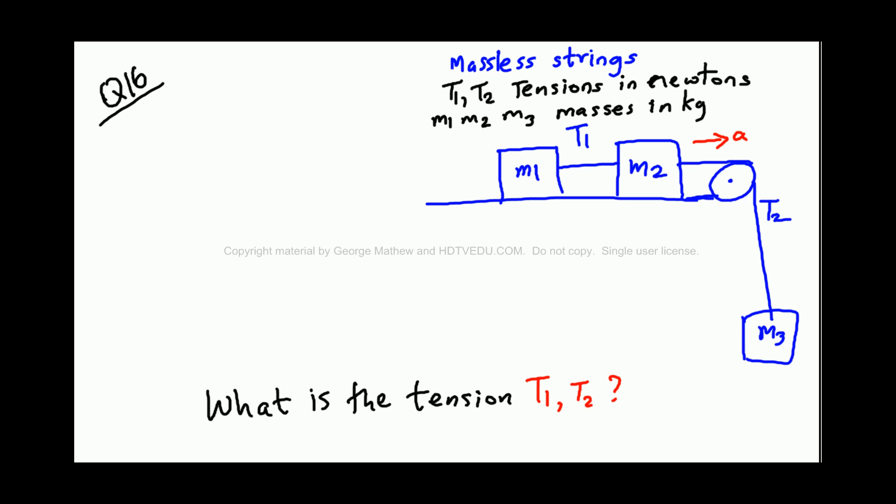Now, tension is always a pulling force, right? So T1 is to the right for M1, but T1 is to the left for M2. Remember, it is a pulling force.